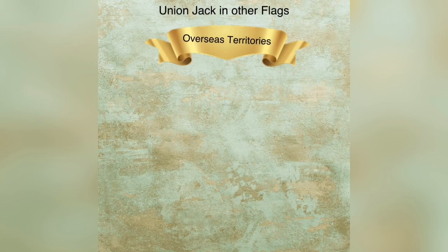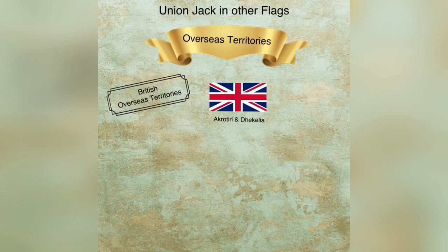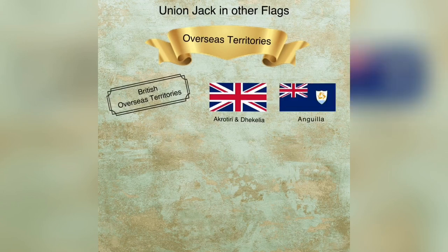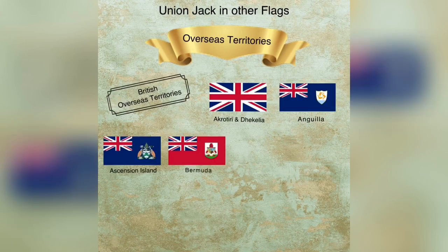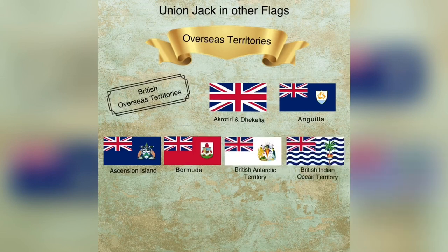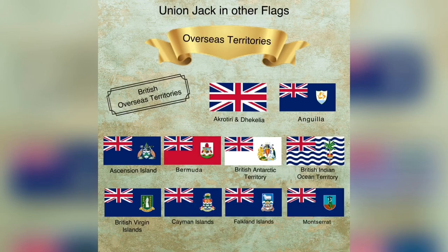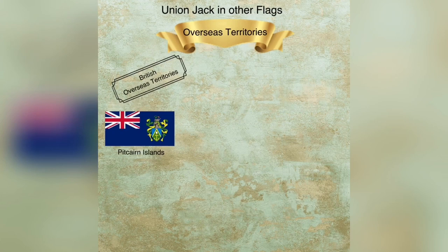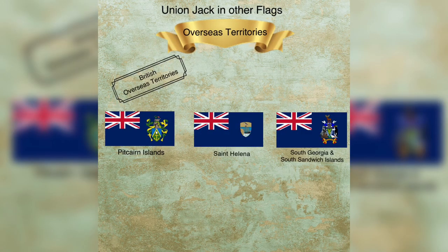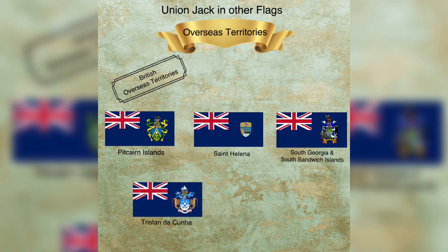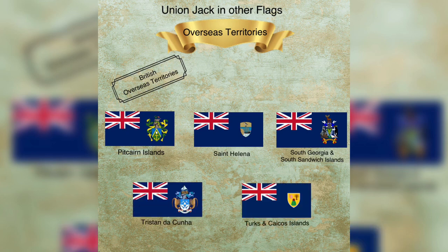The Union Jack can also be found in the flags of many British overseas territories, which includes Acrotiri and Decalia, represented by the Union Jack itself. The others are Anguilla, Ascension Island, Bermuda, British Antarctic Territory, British Indian Ocean Territory, British Virgin Islands, Cayman Islands, Falkland Islands, Montserrat, Pitcairn Islands, Saint Helena, South Georgia and the Sandwich Islands, Tristan da Cunha, and the Turks and Caicos Islands.